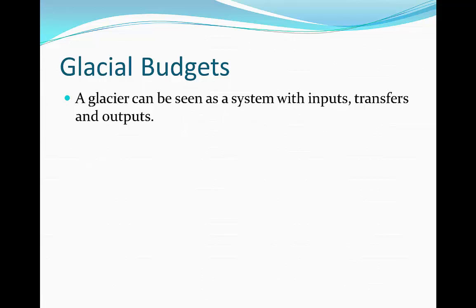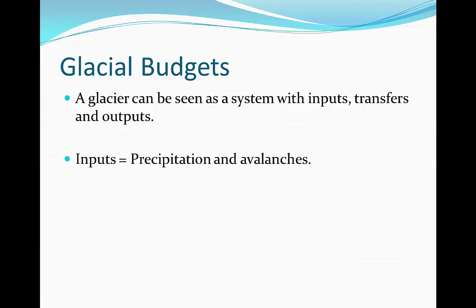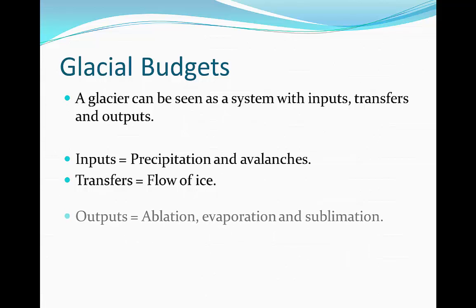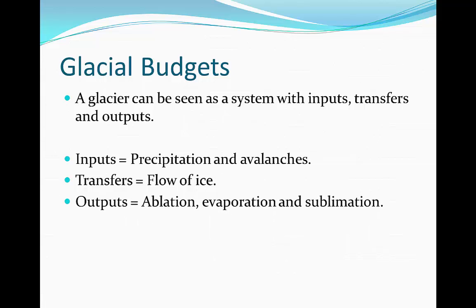A glacier can be seen as a system with a series of inputs, transfers and outputs. The inputs include precipitation and avalanches in the form of snow, and more snow falling on top of the glacier from an avalanche. Transfers mean the flow of ice — the types of flow, which we're going to look at later in the course, are seen as the transfer of the movement of the glacier. And the outputs are ablation, evaporation and sublimation.